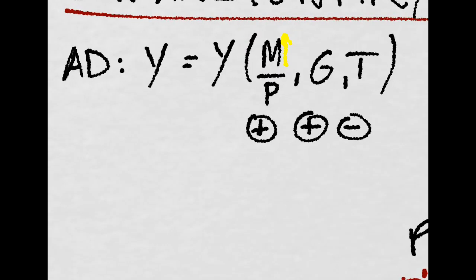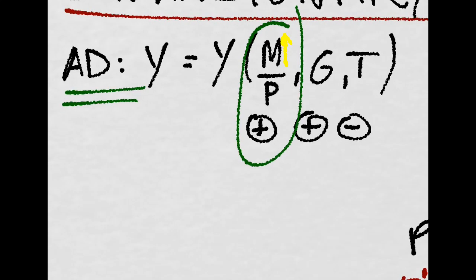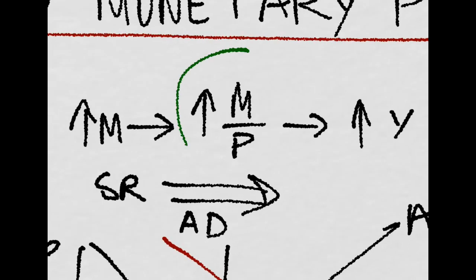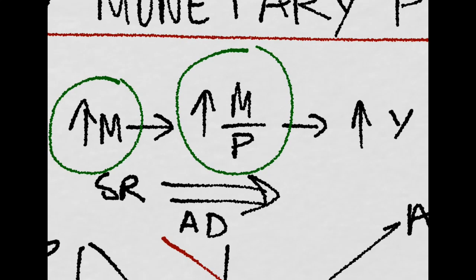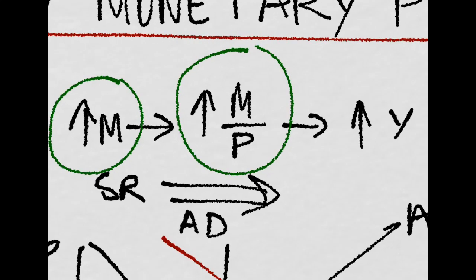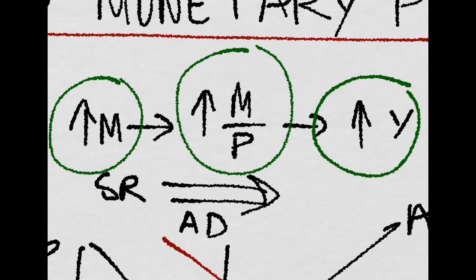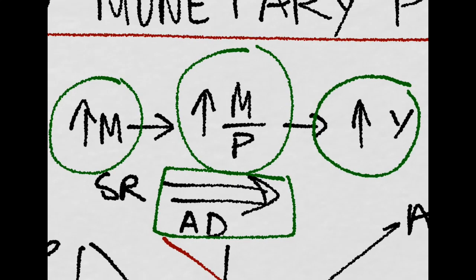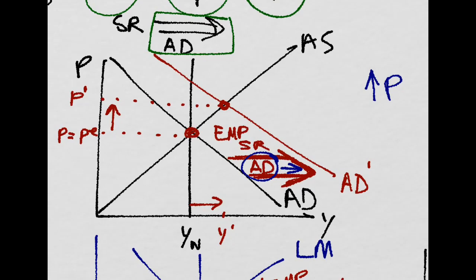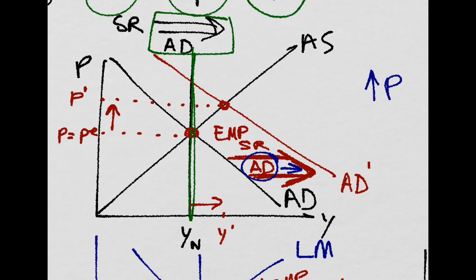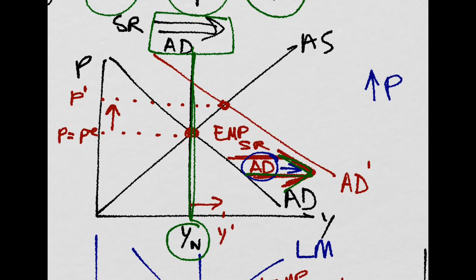Remember that aggregate demand depends positively on the real money stock in the economy. So if the real money stock in the economy increases because the government decides to do an expansionary monetary policy, then that will increase income in the short run. That is, there will be a shift to the right of the aggregate demand curve, which would look something like this. In the beginning, we are at our medium run equilibrium, at our potential output, but then the government shifts aggregate demand with the monetary policy.